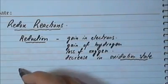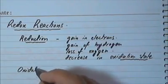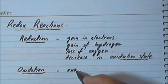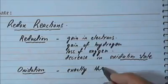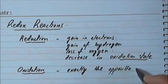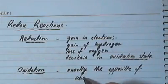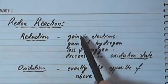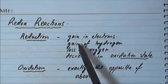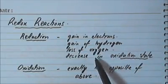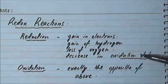Similarly, you have four different definitions for oxidation, but to sum it up: oxidation is exactly the opposite of reduction. So when we say something is getting oxidized, that means it is losing electrons, or losing hydrogen, or gaining oxygen, or its oxidation state is increasing — the opposite of all four definitions of reduction constitutes oxidation.